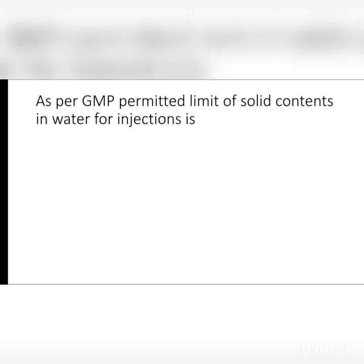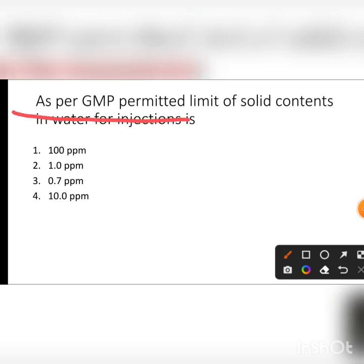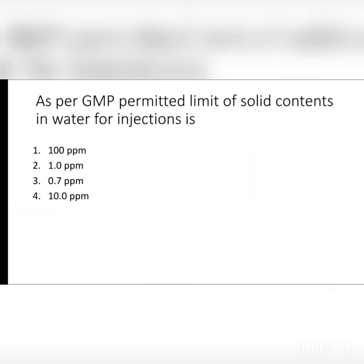Next question: as per Good Manufacturing Practice (GMP), the permitted limit of solid contents in water for injection. Options are 100 ppm, 1.0 ppm, 0.7 ppm, and 10.0 ppm. The GMP permitted limit for solid content in water for injection is 10.0 parts per million (ppm).